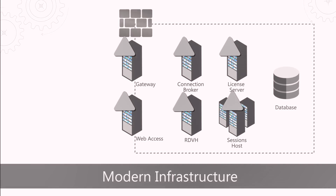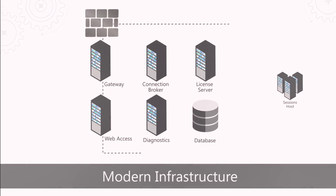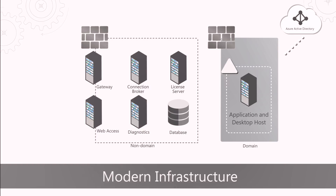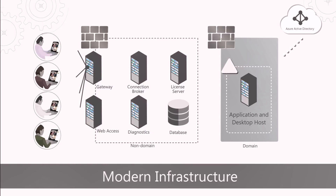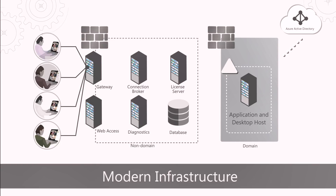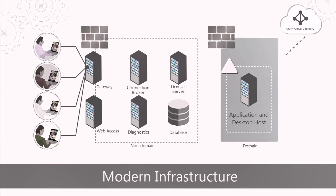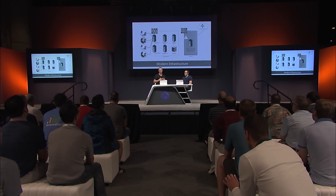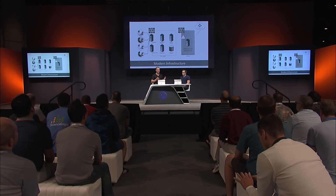Now with the modern infrastructure roles, we can isolate the infrastructure components from the application and desktop hosts. The internet-facing roles like RD Web and RD Gateway are no longer joined to the domain. Because of this, we can now support multi-tenant deployments. Also, in the new infrastructure there is no more RDVH role — we brought the VDI management capabilities directly into our connection broker. And we have added a new diagnostic role to troubleshoot end-to-end connectivity problems.